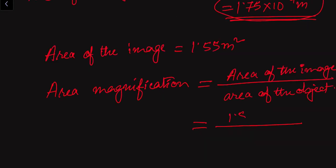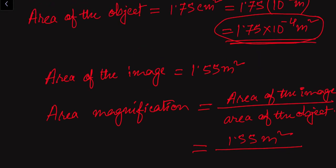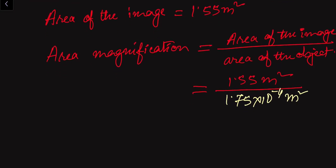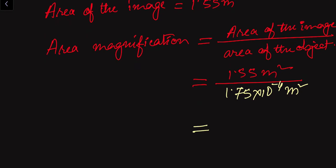The area of the image is 1.55 meter square, and the area of the object is 1.75 into 10 to the power minus 4 meter square. Dividing these, the meter square units cancel, giving an area magnification of approximately 8857 times.